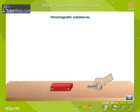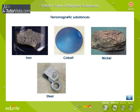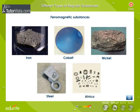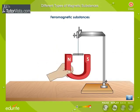Substances exhibiting strong magnetic properties are called ferromagnetic substances. Iron, cobalt, nickel, steel, alnico, etc. fall under this category. If an iron rod is suspended in a magnetic field, it quickly aligns itself along the direction of the magnetic field. A ferromagnetic substance, when placed in a magnetic field, is strongly magnetized in the direction of the magnetizing field. Temperature has an adverse effect on a ferromagnetic substance; due to rise in temperature, a ferromagnetic tends to lose its magnetism.